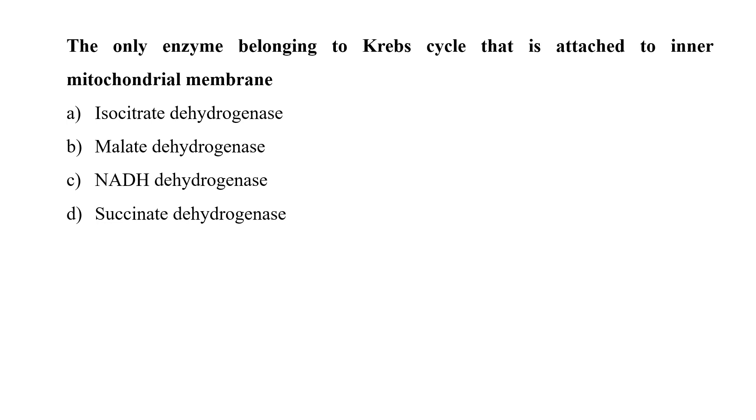The only enzyme belonging to Krebs cycle that is attached to inner mitochondrial membrane, that's very easy. Succinate dehydrogenase, also known as respiratory complex II, is found embedded in inner mitochondrial membrane of eukaryotes. It is only enzyme which is common to Krebs cycle and electron transport chain.